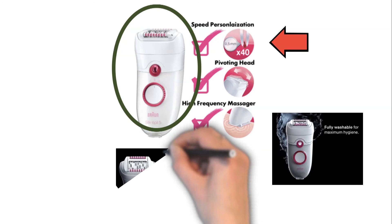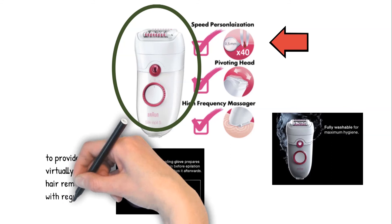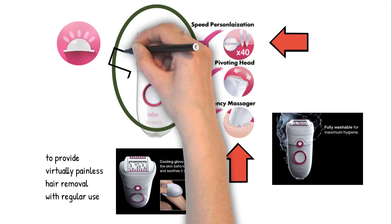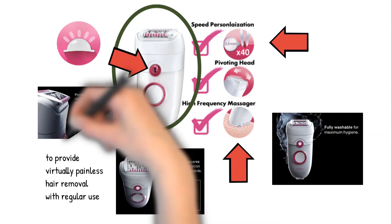Massage rollers and a cooling glove make epilation more comfortable to provide virtually painless hair removal with regular use. The high frequency massage system stimulates the skin for a more comfortable experience. The smart light feature reveals even the finest hairs for precise hair removal. The pivoting head follows the contours of your body for better skin contact and more gentle performance.